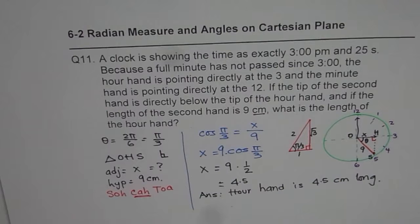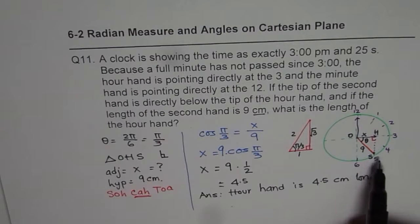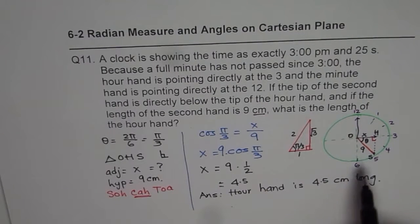Remember SOHCAHTOA. Sine is ratio of opposite over hypotenuse, cos adjacent over hypotenuse, tan opposite over adjacent. Make a neat sketch. Understand the statements. Make a sketch.